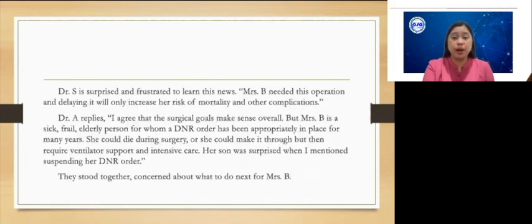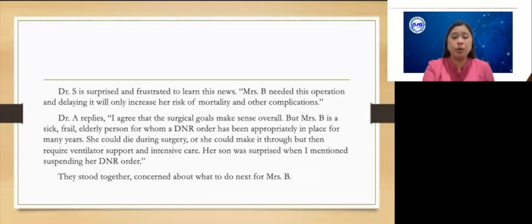Dr. S. is surprised and frustrated to learn this news. Mrs. B. needed the operation and delaying it will only increase her risk of mortality and other complications. Dr. A. replies, 'I agree that the surgical goals make sense overall, but Mrs. B. is a sick, frail, elderly person for whom a DNR order has been appropriately in place for many years. She could die during surgery, or she could make it through but then require ventilator and intensive care. Her son was surprised when I mentioned suspending her DNR order.' They stood together, concerned about what to do next for Mrs. B.